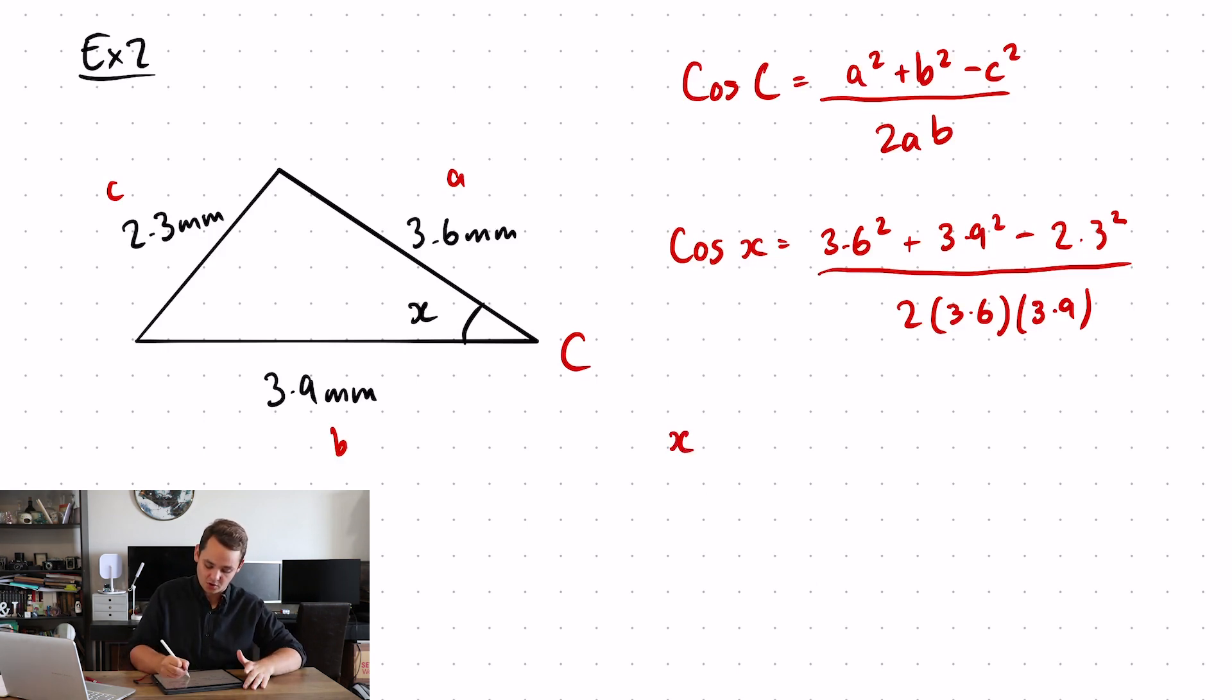So, I need to do the opposite of cosine, which hopefully you remember is inverse cosine. So, I'm going to do the inverse cosine of 3.6 squared plus 3.9 squared minus 2.3 squared all over 2 lots of 3.6, 3.9.